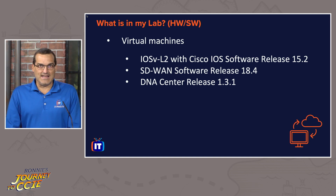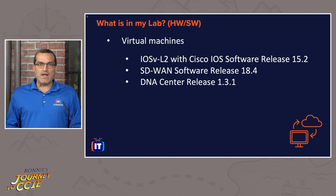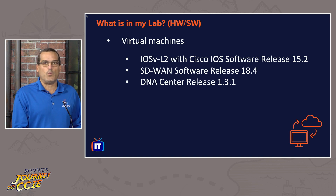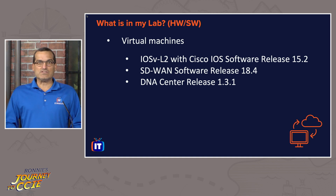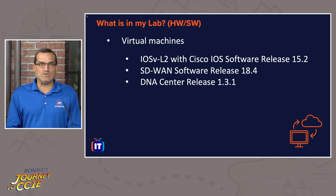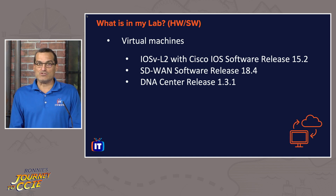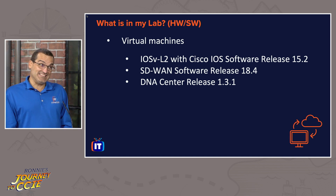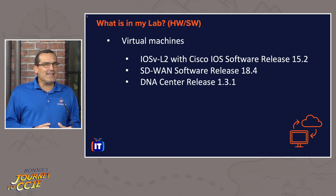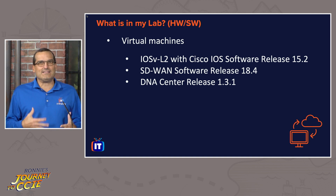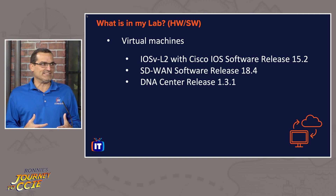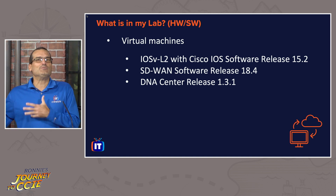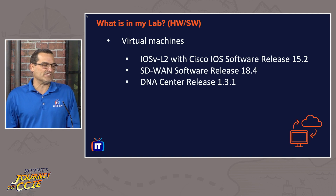And then finally, DNA Center. Again, very important that Ronnie is aware that it's 1.3.1 code. So if there's new 2.X DNA Center out there, he's not going to worry about those new features. One exception to that would be the design section, but I think that Cisco is going to use some common sense here and they're not going to be testing you on features outside of that code.